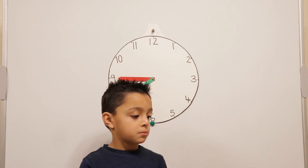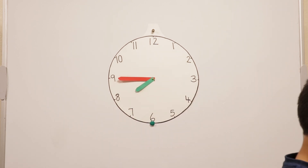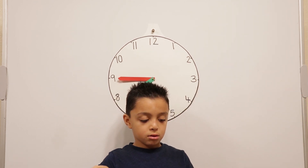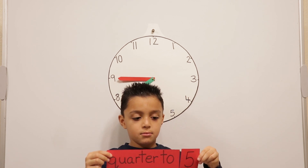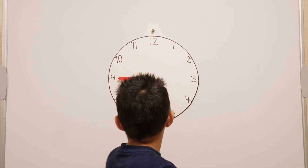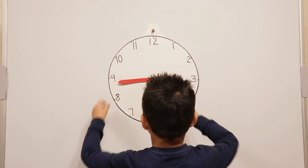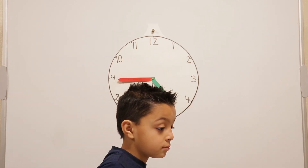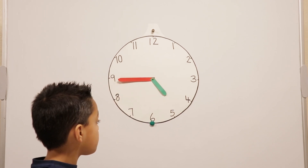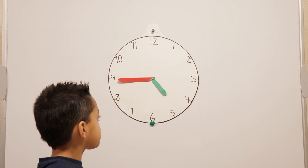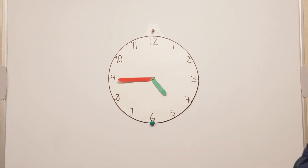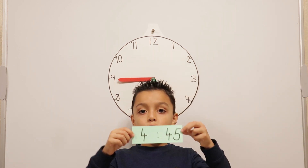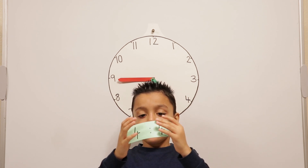Let's do quarter to five. The hour hand is not yet on the five, and the minute hand has gone around three quarters — so that's quarter to five. The second way to write it is four forty-five, because forty-five minutes has gone past four o'clock.